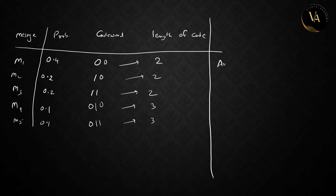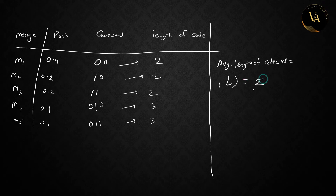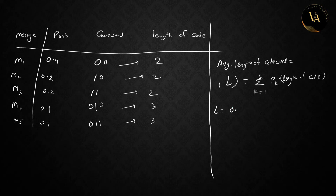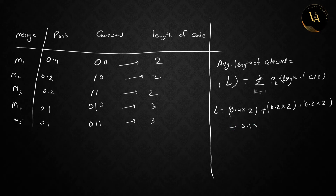For average length, the formula is: average length L = summation (k = 1 to 5) of P(k) × length of code word. So L = 0.4×2 + 0.2×2 + 0.2×2 + 0.1×3 + 0.1×3. This gives L = 2.2 bits per symbol.